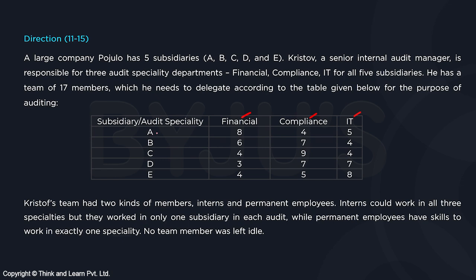If you look at subsidiary A, he needs eight members for financial, four for compliance, five for IT, and similarly for subsidiaries B, C, D and E.